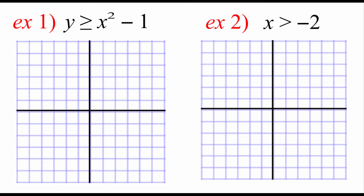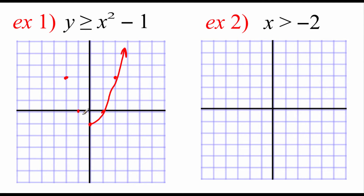Looking at our first example, we've got y is greater than or equal to x squared minus one. We should recognize that graph as a parabola just shifted down one space. Since this is a greater than or equals to symbol, we would want to draw in this graph using a solid line.